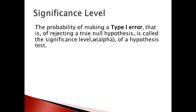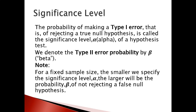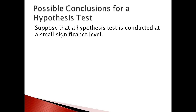Another term you need to be familiar with is significance level. The significance level is the probability of making a Type 1 error — that is, the probability of rejecting a true null hypothesis. We denote this by the symbol α. We denote the Type 2 error probability by the symbol β. For a fixed sample size, the smaller we specify the significance level α, the larger will be the probability β of not rejecting a false null hypothesis.